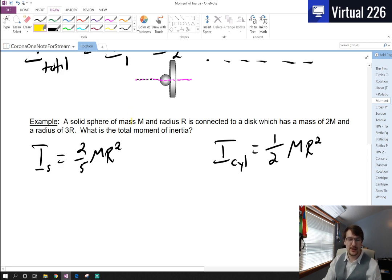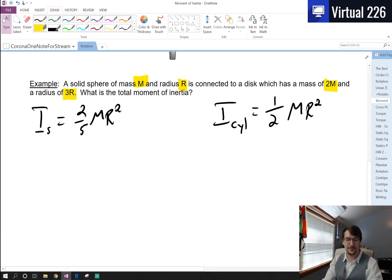The other thing we need to do is figure out what are the masses and radii of our problem. The sphere has mass M and radius R. The disk has a mass twice that of the sphere and a radius three times that of the sphere. To find the total moment of inertia, we just need to add these two together.